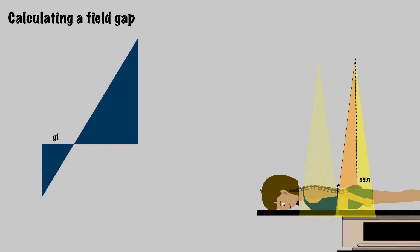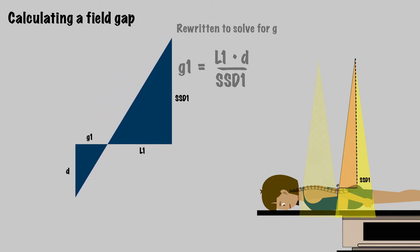We're going to pull out these two triangles and enlarge it over here and label it. Here is G1, which is part of the gap, and here is D, which is the depth of the match point in your patient. The other triangle, SSD1 and L1, for the length from the central axis to the edge of the field. Now you can see G1 is to D, as L1 is to SSD1. That's the rule of similar triangles. Let's rewrite this as G1 equals L1 times D, the depth, over SSD1. So that's the equation for this part of the gap.